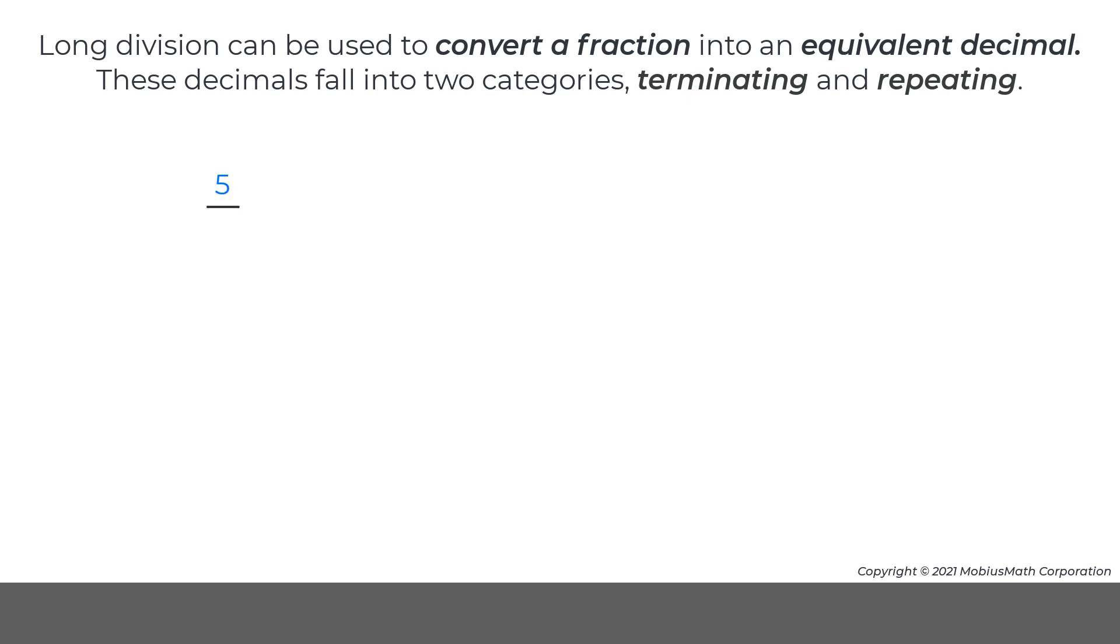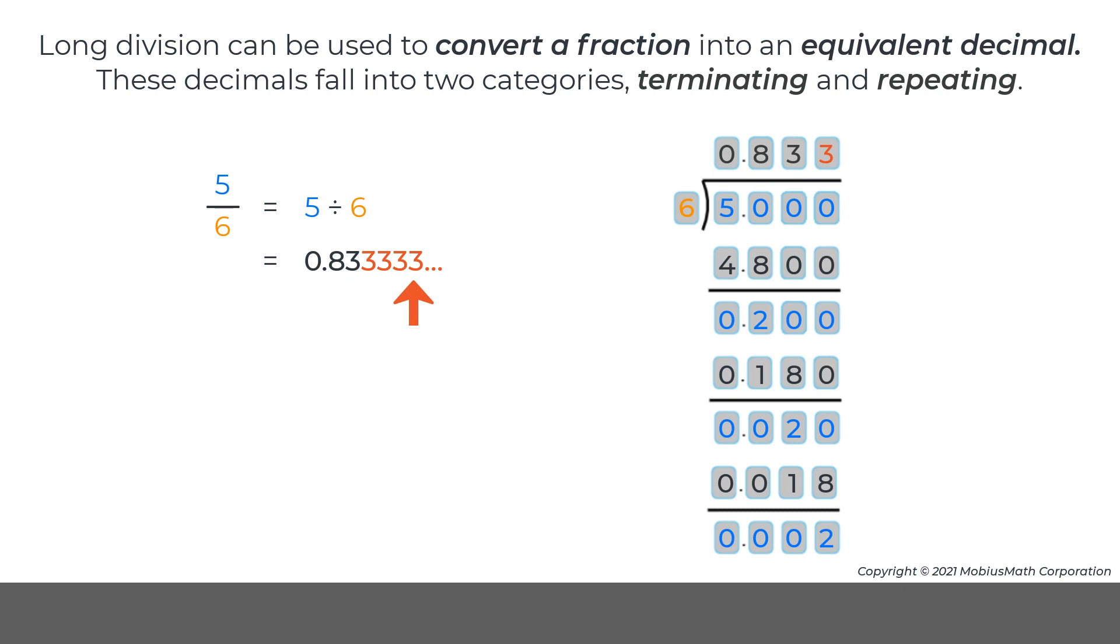When dividing the numerator by the denominator of a fraction results in one or more repeating non-zero digits, the decimal is referred to as a repeating decimal. A bar is placed over the digits that repeat to indicate the repeating digits in the decimal.